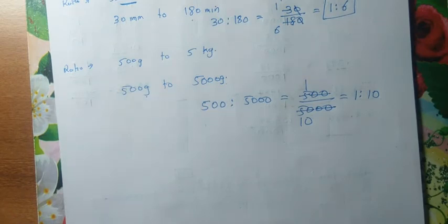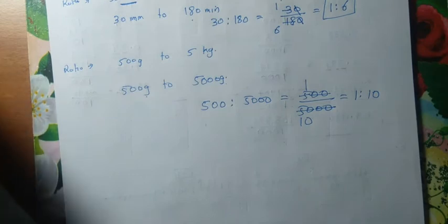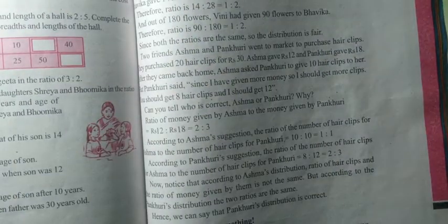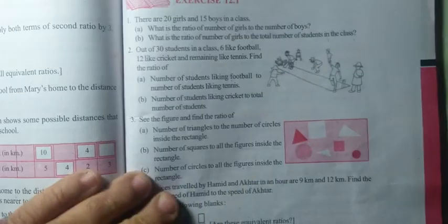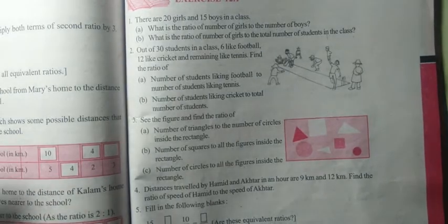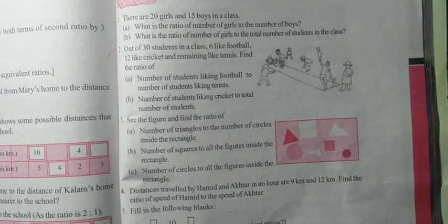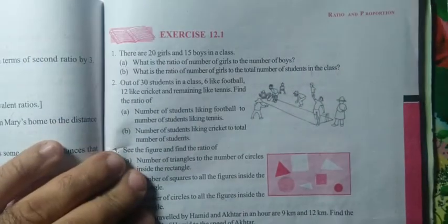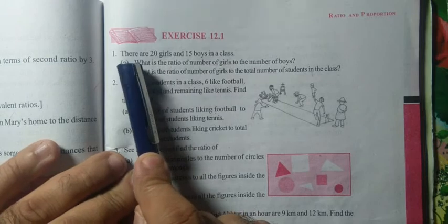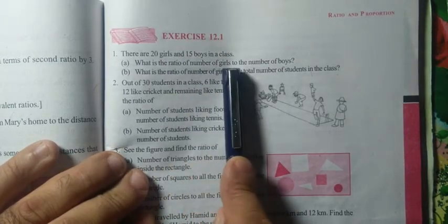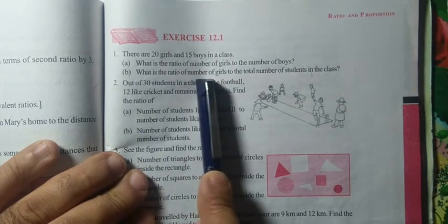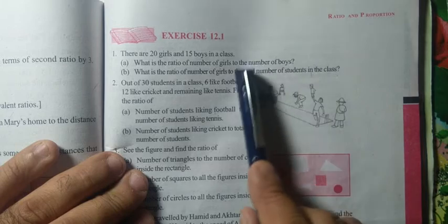Now based on this, your exercise is Exercise 12.1, which has a total of 16 questions. You have to do the first 10 questions. The questions after that are a bit tricky and I will explain them in the next class. Question 1: there are 20 girls and 15 boys in the class. Find the ratio of number of girls to number of boys, and number of girls to total number of students. To find total students, add both.